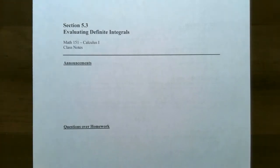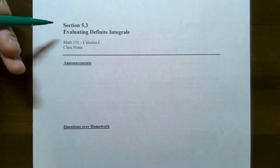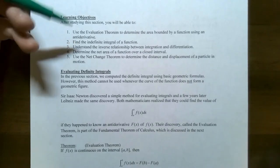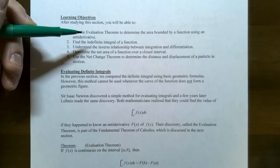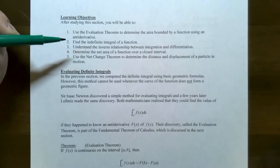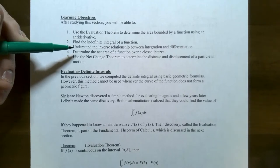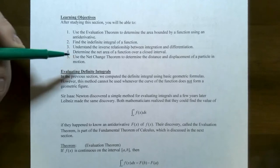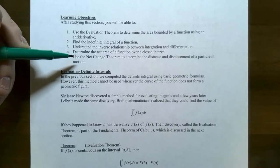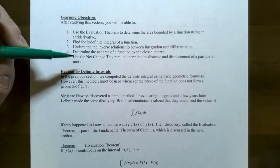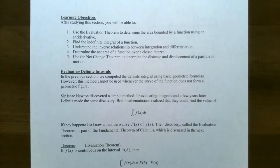Hi everyone, it's Professor Pemberton. In this video we're going to look at how to evaluate definite integrals. In this section we're going to look at the evaluation theorem and we're going to be able to determine the area bounded by a function using an anti-derivative. We're going to be able to find an indefinite integral of a function in the next video. We will also study the inverse relationship between integration and differentiation, and then in the next video we'll look at how to determine the net area of a function over a closed interval and also use the net change theorem in terms of distance and displacement of a particle in motion.